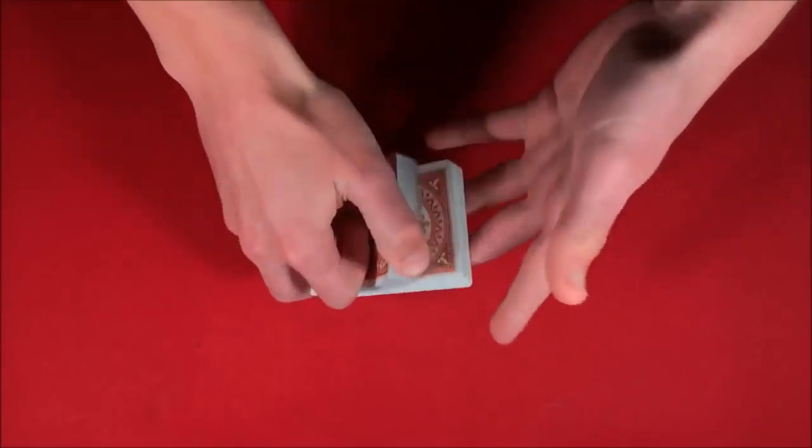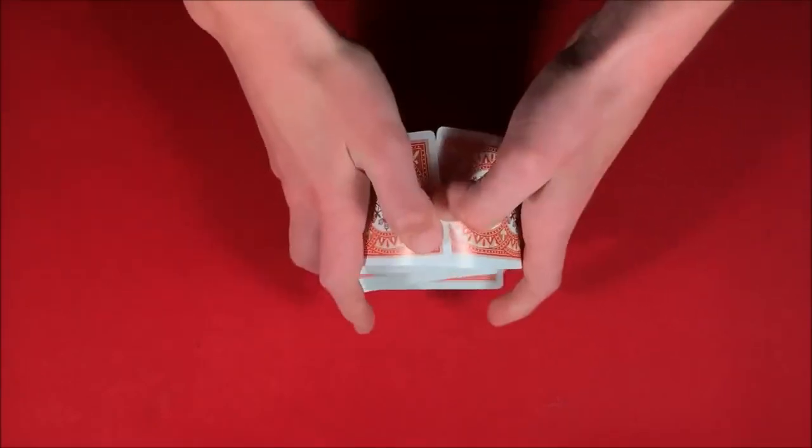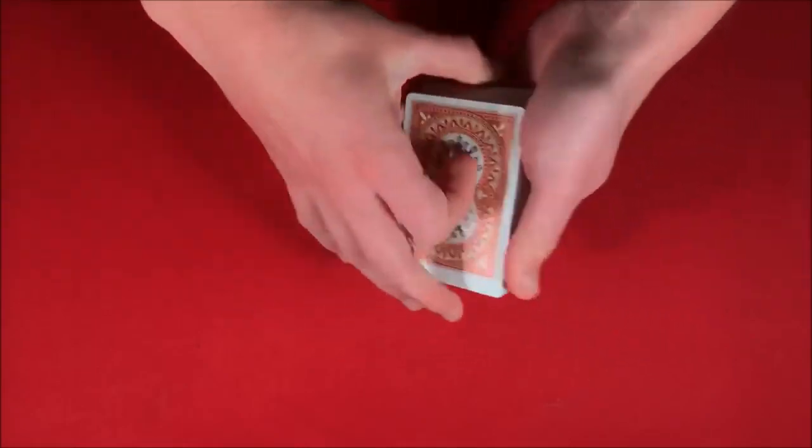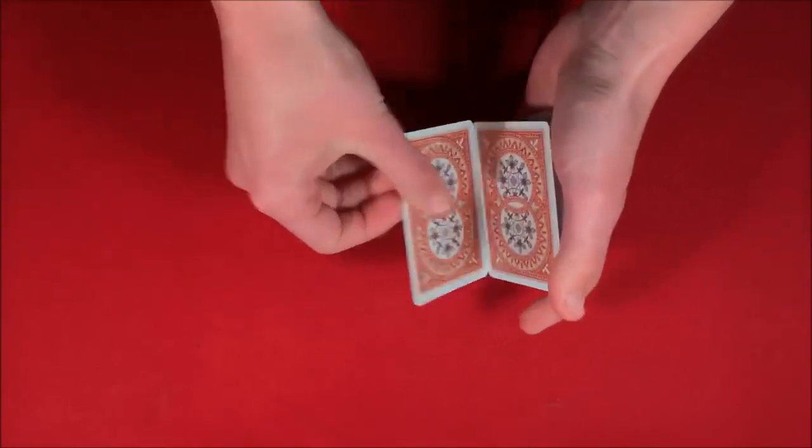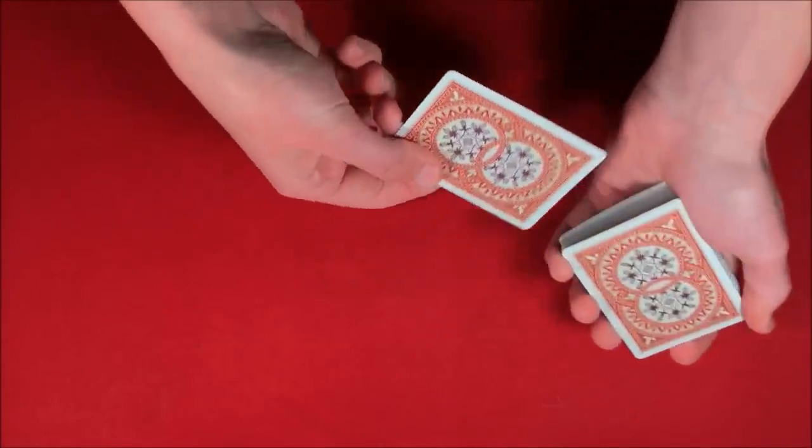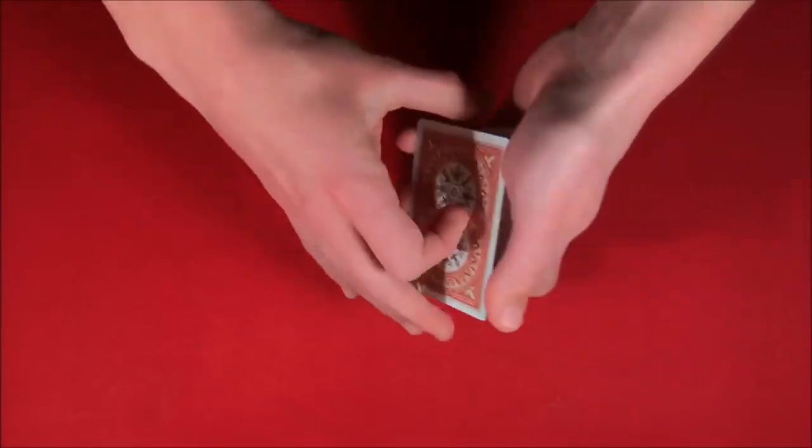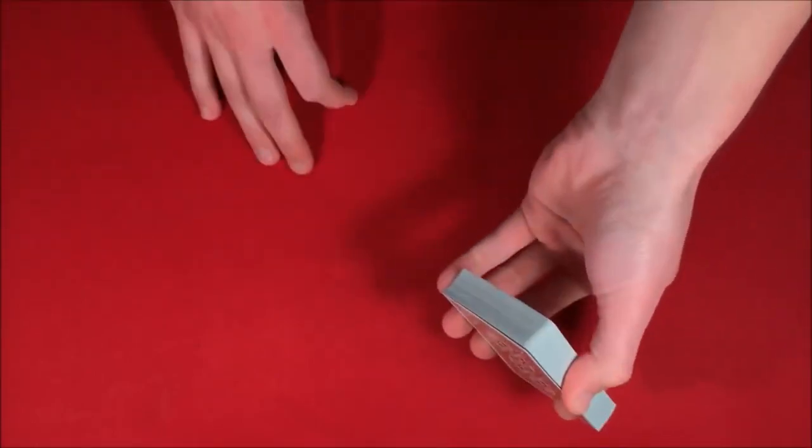Let's say you could have the spectator shuffle up the deck, and then what you could do is tell them - let's say we take the top card, in this case the five of clubs - you're going to take the five, put it into the middle, and you show them that you don't really know exactly where it is.